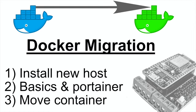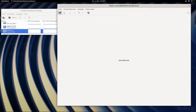Part two is installing and updating Portainer — Portainer is a graphical web interface for Docker — as well as some basic information about Docker in general. Part three is a simple way to migrate a running container. It's not an online migration; it is the migration of a container to a new Docker host.